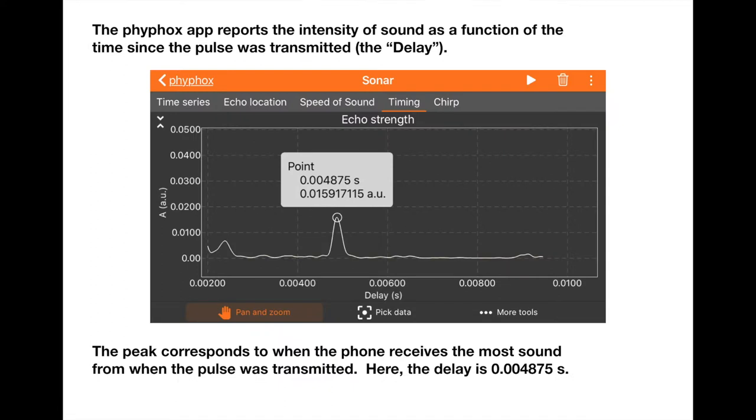The Phyphox app will produce data that looks like this. This is a graph that shows amplitude in AU, which means arbitrary units. This is the amplitude of the sound wave that's received, and it's plotted as a function of delay time, or delay in seconds. This is essentially giving you how much noise the phone is hearing after it transmits the pulse. The peak corresponds to when the phone has received the most sound from when the pulse was transmitted.